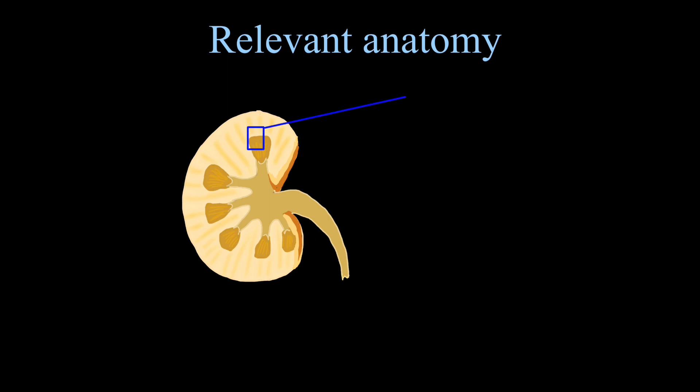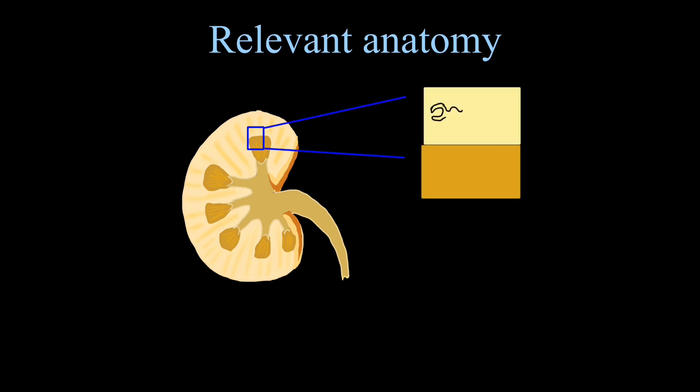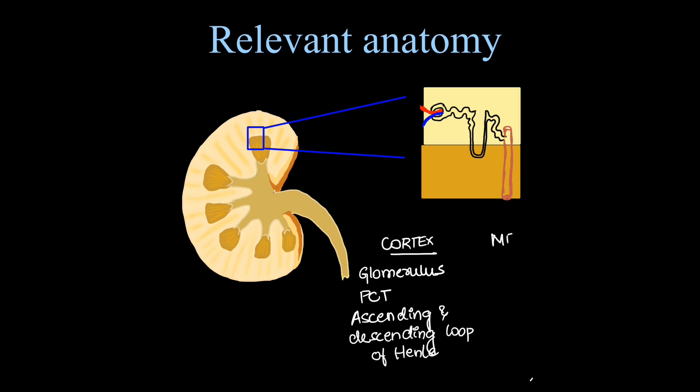If we take a microscopic section at this level, we can see the light yellow one is the cortex, dark yellow one is the medulla and the one in black which I am drawing now is the nephron. What are the parts of nephron lying in the cortex? We have the glomerulus with afferent and efferent arterioles, proximal convoluted tubule, ascending and descending loop of Henle. These all lie in the cortex and medulla contains mainly the collecting ducts.